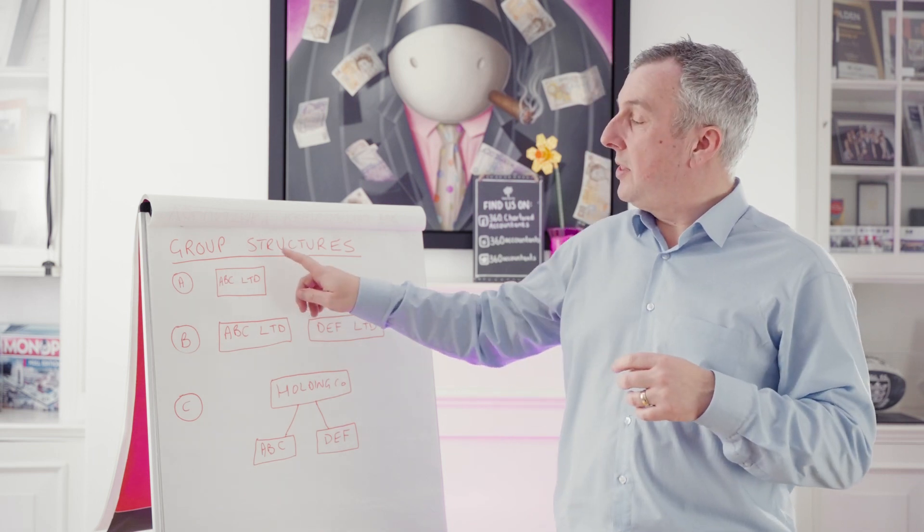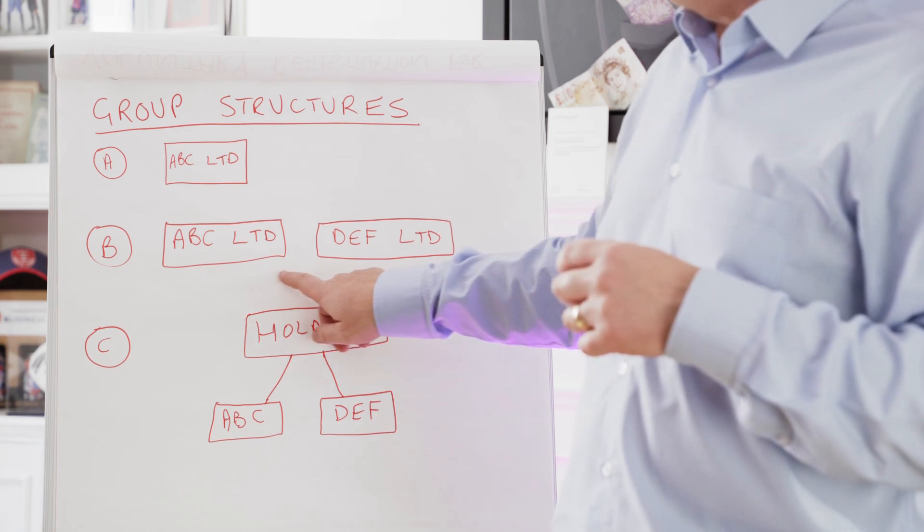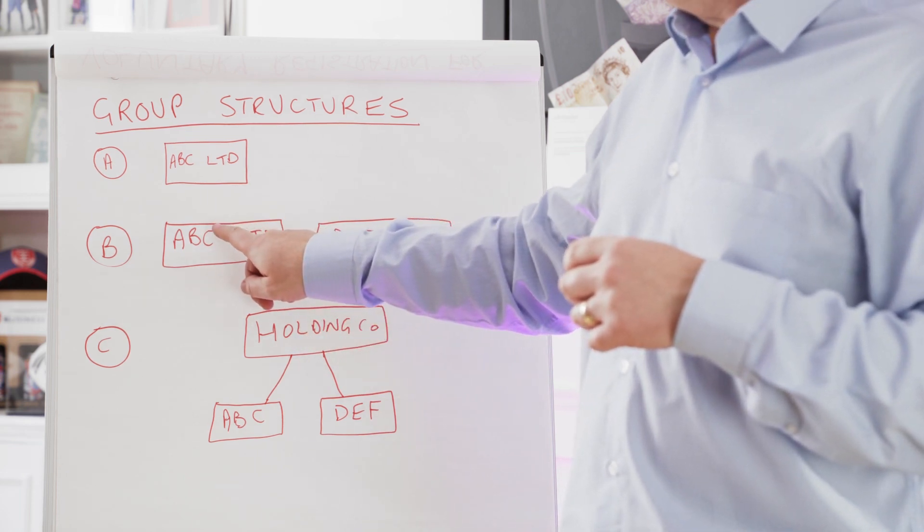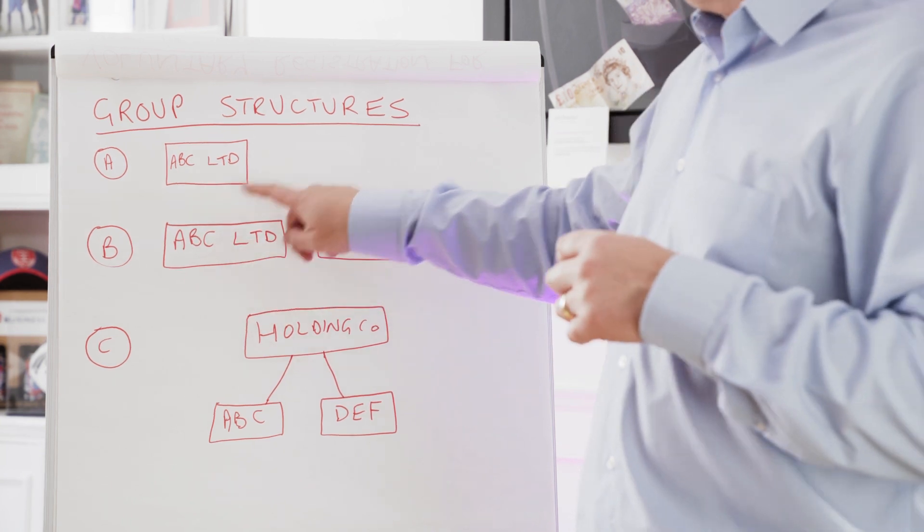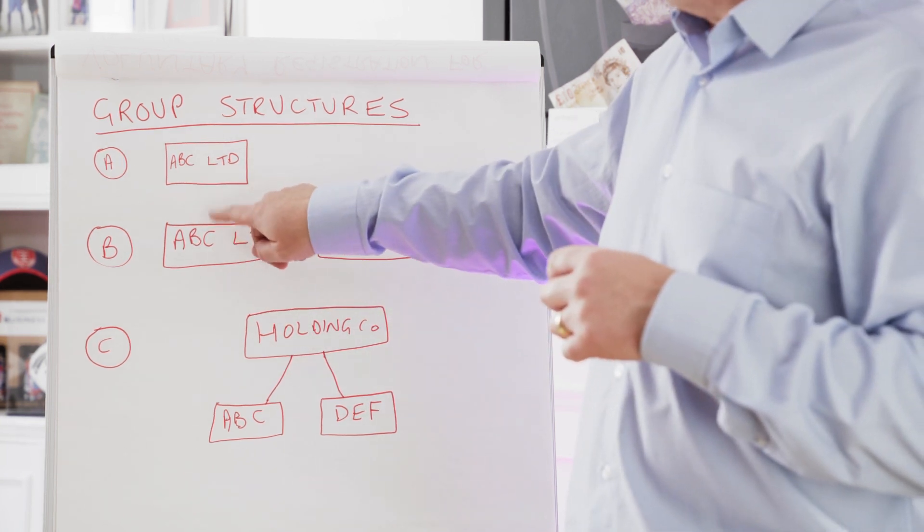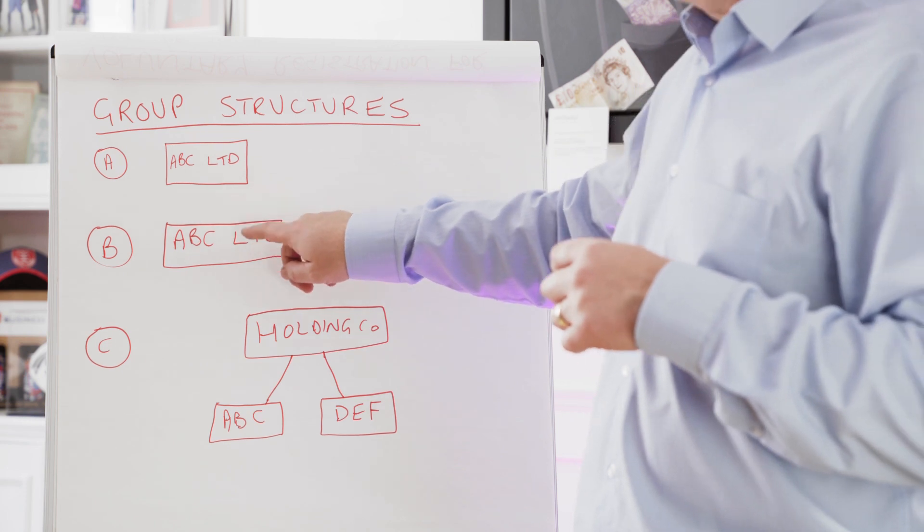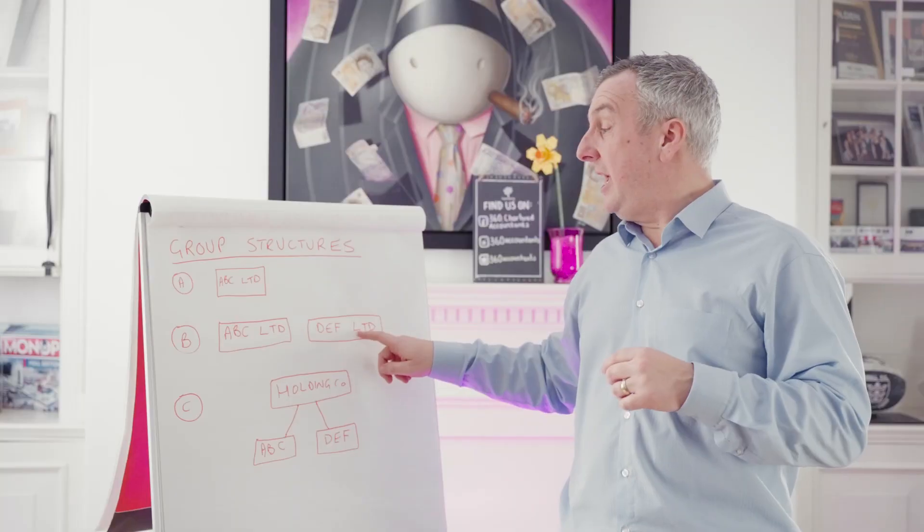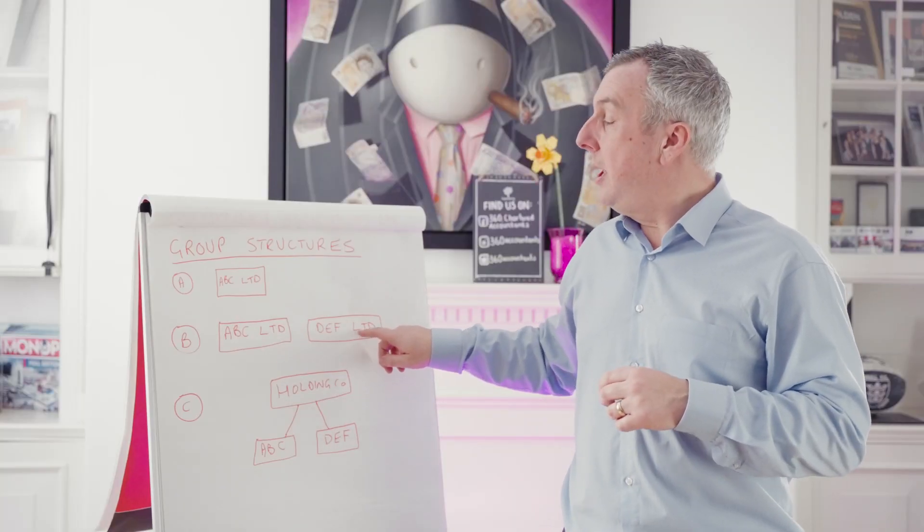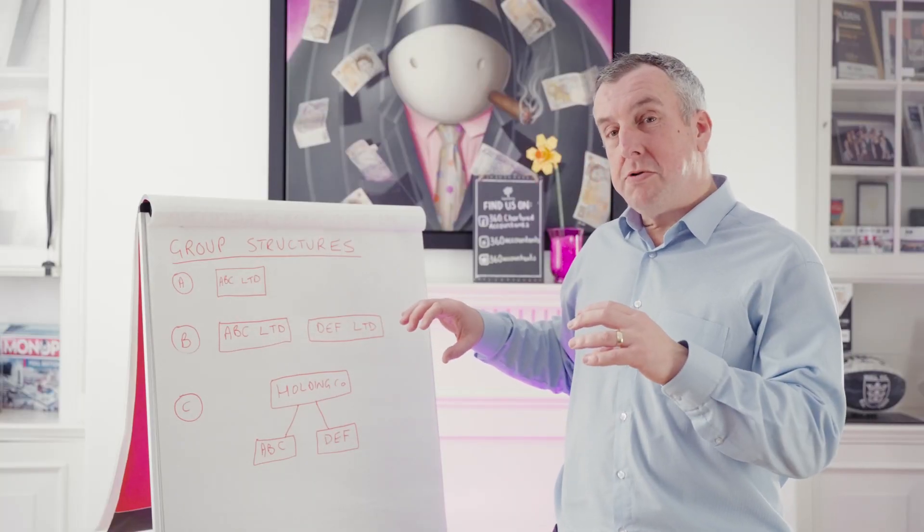So that would be scenario B on this diagram. You've got the original ABC Limited trading over here, and then that would be owned by the original shareholders. And then they set up another completely separate limited company, DEF Limited in this example, and that splits the trade out.